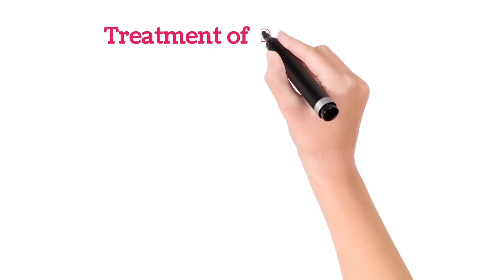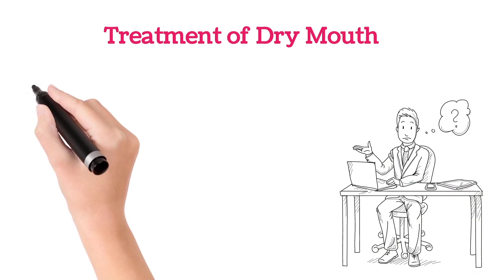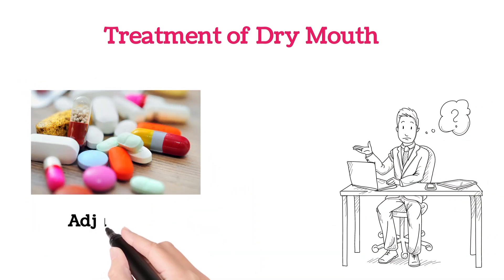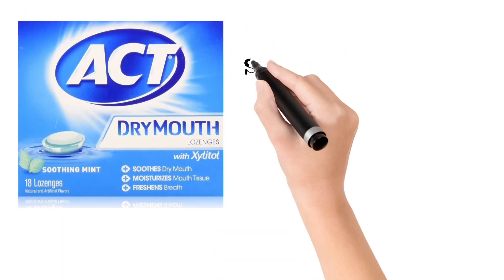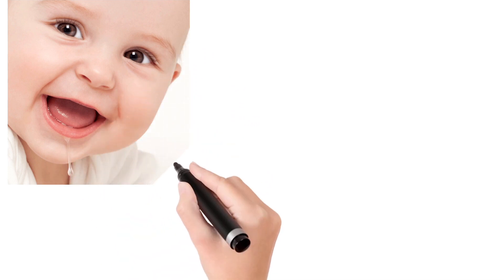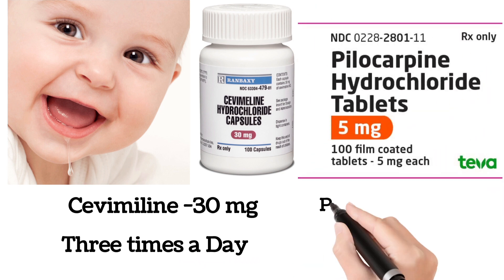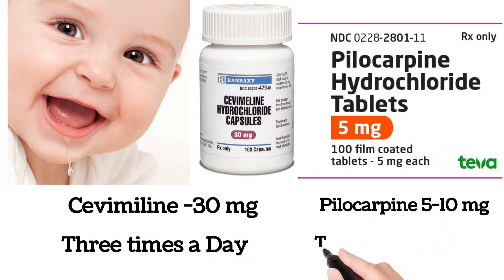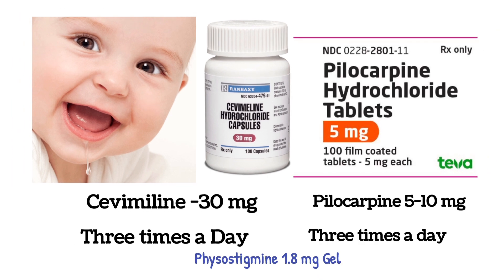Treatment of dry mouth totally depends upon the underlying cause. If dry mouth is because of medications, altering the medicines or adjusting the dosage is needed. If the dry mouth is severe, the doctor may advise sorbitol or xylitol lozenges, or they may advise certain tablets which stimulate saliva production, like cevimeline 30 mg three times a day, or pilocarpine 5–10 mg three times a day, or topical application of physostigmine 1.8 mg. These medicines are helpful in conditions with dry mouth.